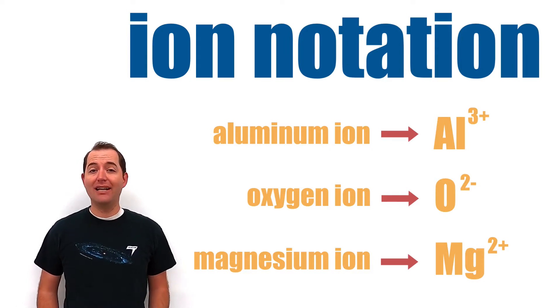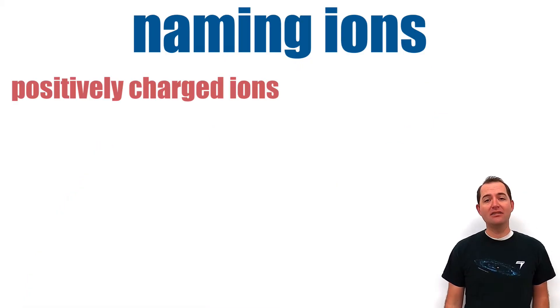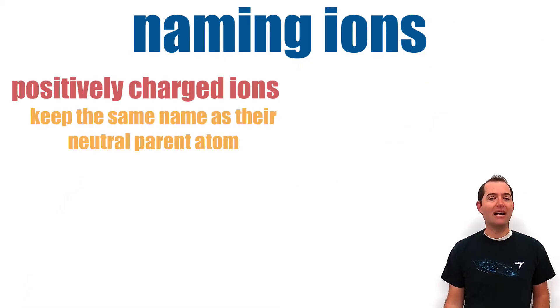As you can see, ions can have a positive or a negative charge. Their different charges also lead to different naming conventions.